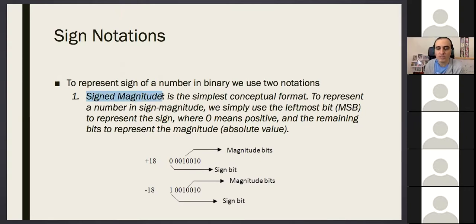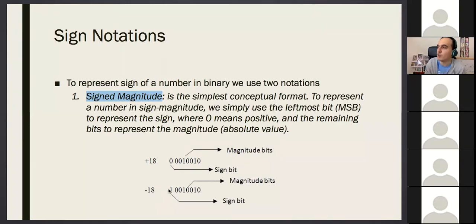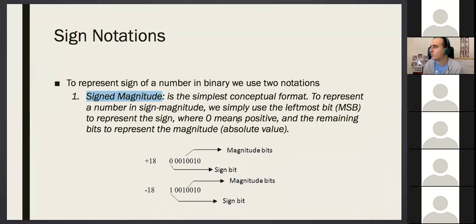What we do is: imagine you have an eight-bit number — eight cells, eight flip-flops. You assign one of the bits to indicate the sign. In the sign-magnitude notation, you use the most significant bit for sign: if it is zero, it means positive; if it is one, it means negative. The magnitude is calculated from the rest of the bits. For example, this gives plus 18 (MSB=0) and this gives minus 18 (MSB=1). Simple notation, not widely used.